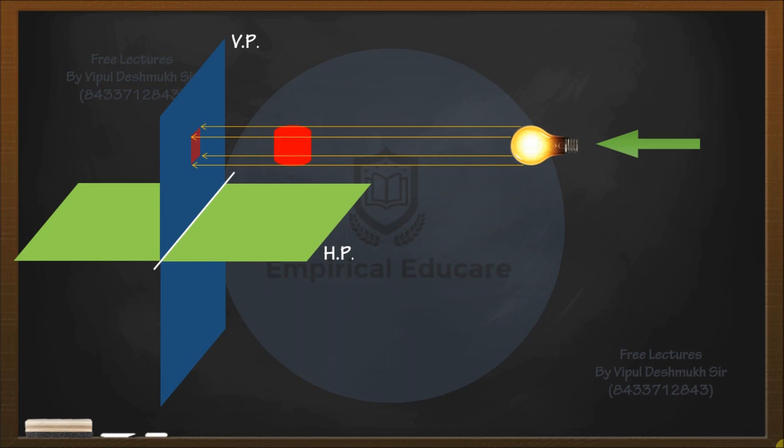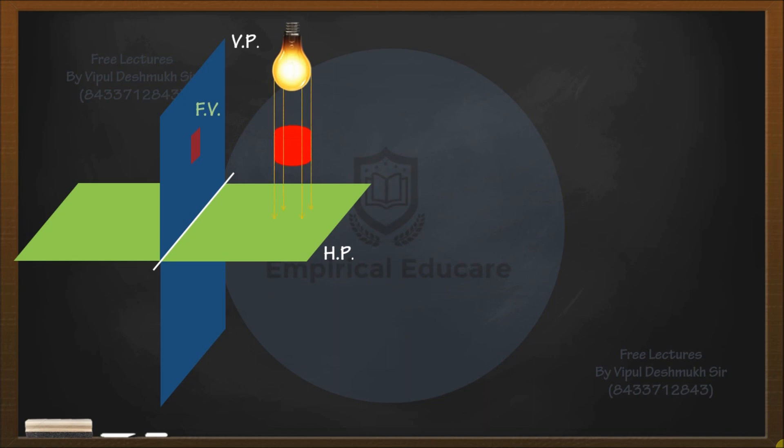Now I am going to change the position of my light source - now it is perpendicular to HP. I'm switching on the light source and light rays will travel and form a shadow, but this time the shadow will be a circle because it is a cylinder and we are observing from the top. Hence it is a top view.